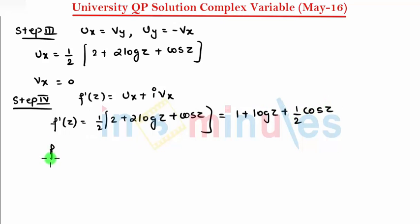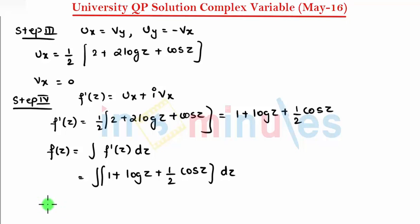So I want f of z, that means I need to integrate f dash of z with respect to dz. After integrating 1 plus log z plus 1 by 2 cos z with respect to dz, the integration of 1 with respect to z is z.